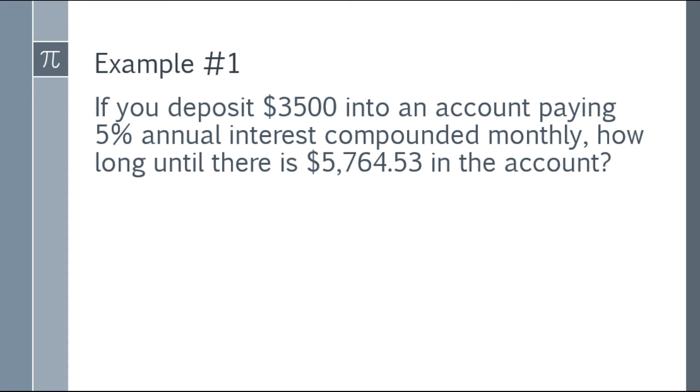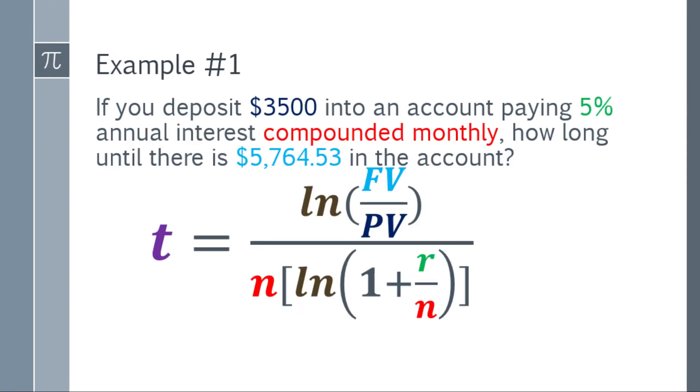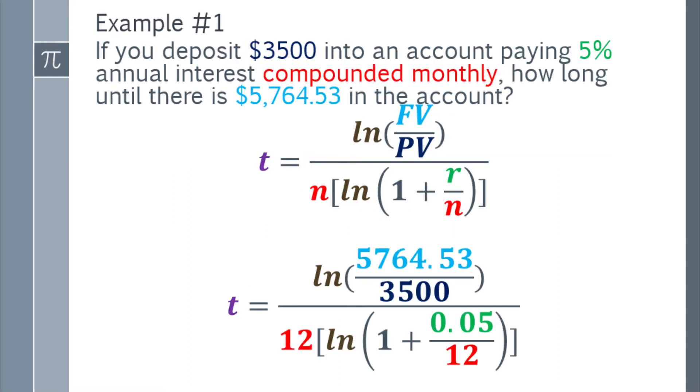Let's have some examples now. Example number 1: If you deposit $3,500 into an account paying 5% annual interest compounding monthly, how long until there is $5,764.53 in the account? If you deposit $3,500 into an account paying 5% annual interest compounded monthly, how long will you wait for it to become $5,764.53? Obviously, we're looking for the time. Let's use the formula for time in compound interest.